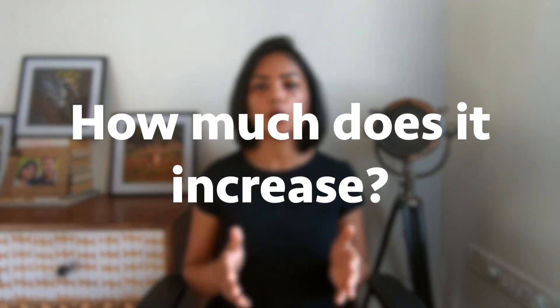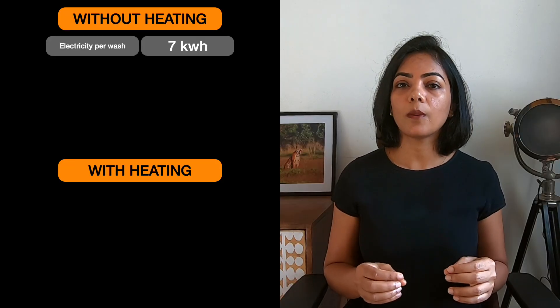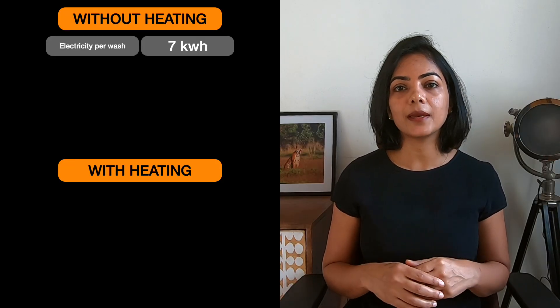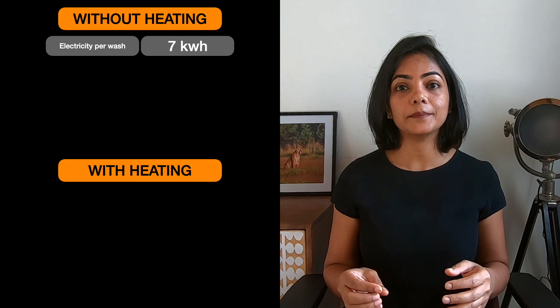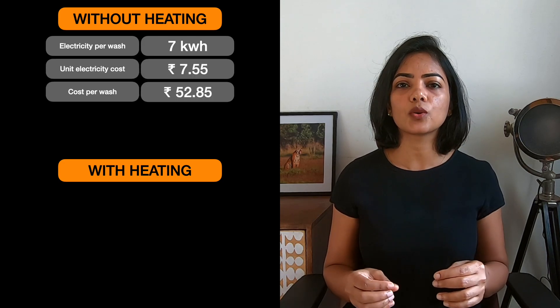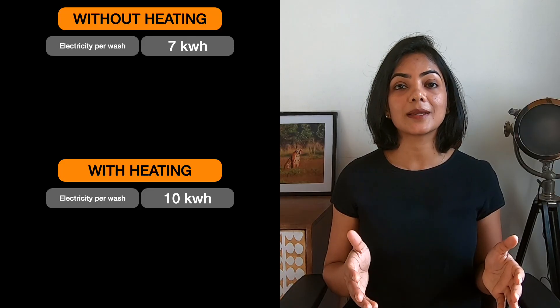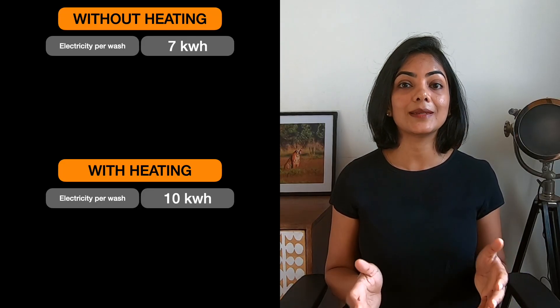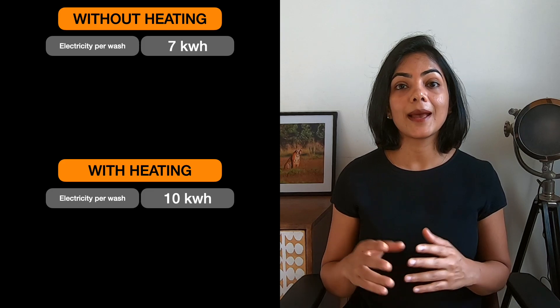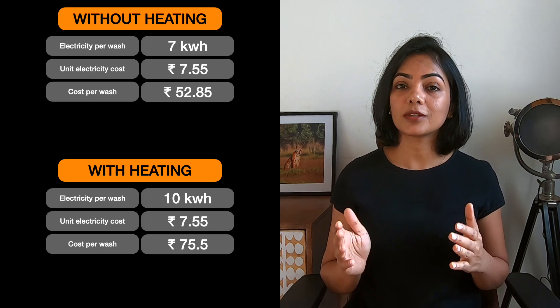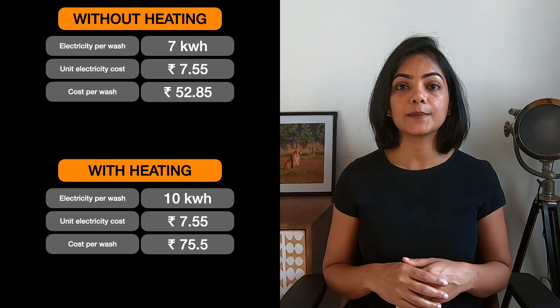If you're running your washer dryer in the daily wash cycle without heating, you will require about 7 kilowatt hours of electricity and that comes to about 53 rupees per wash. If you're using your washer dryer with heating, then the consumption of electricity will be 10 kilowatt hours and that comes to about 75 rupees per wash.